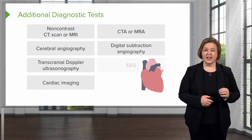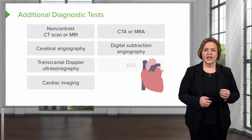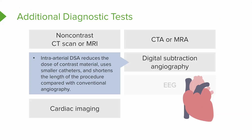The last one is a bit of a mouthful: digital subtraction angiography, or DSA — intra-arterial digital subtraction angiography. It reduces the dose of contrast material needed, uses smaller catheters, and shortens the length of the procedure. That's why they might also choose to do a DSA.